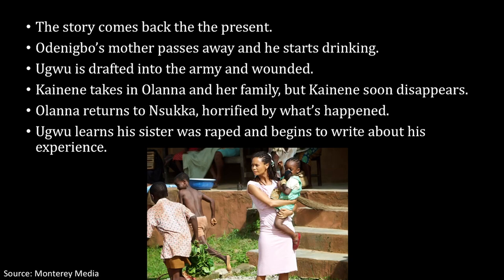The story then comes back to the present. Odenigbo's mother passes away and he starts drinking heavily. Ugwu is drafted into the army and wounded. Kainene takes in Olanna and her family, but then she soon disappears. Olanna then returns to Nsukka, horrified by what's happened, and Ugwu learns his sister was raped and begins to write about his experiences.